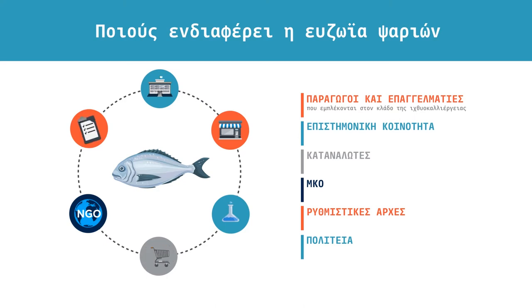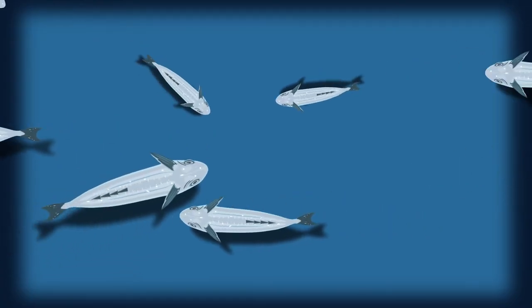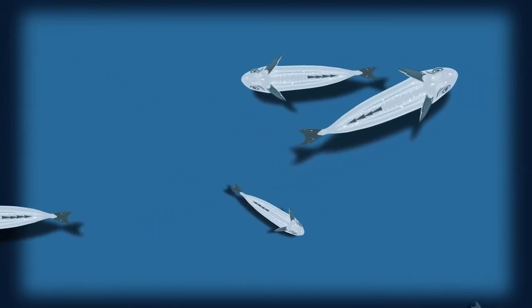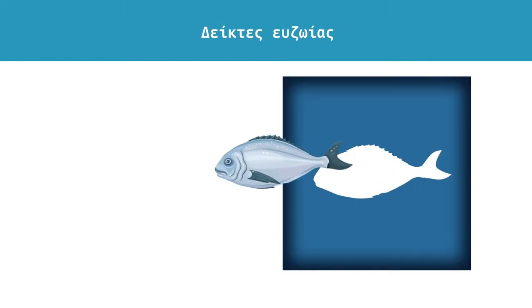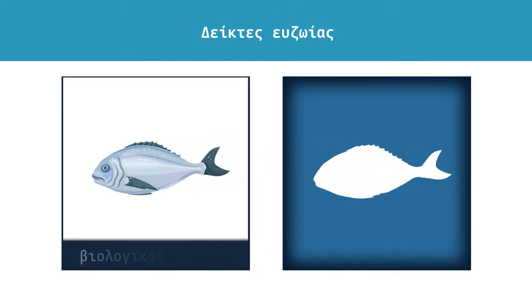In order to evaluate welfare standards, specific measurable welfare indicators have been developed. These indicators can either be direct, relating to the fish themselves, or indirect, relating to the rearing environment and infrastructure.